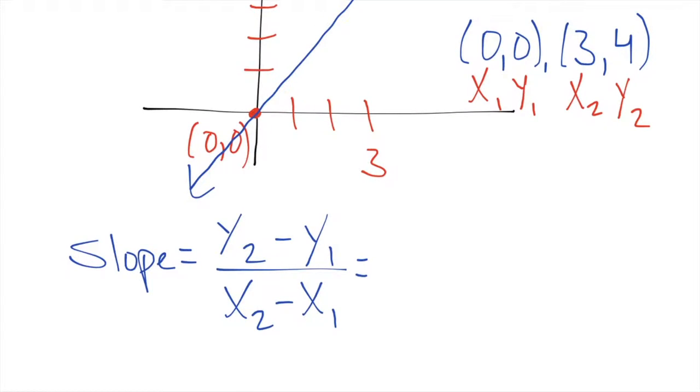So y₂ is going to be four minus zero over three minus zero. Four over three is our slope, and I should have put that slope is m, I apologize.